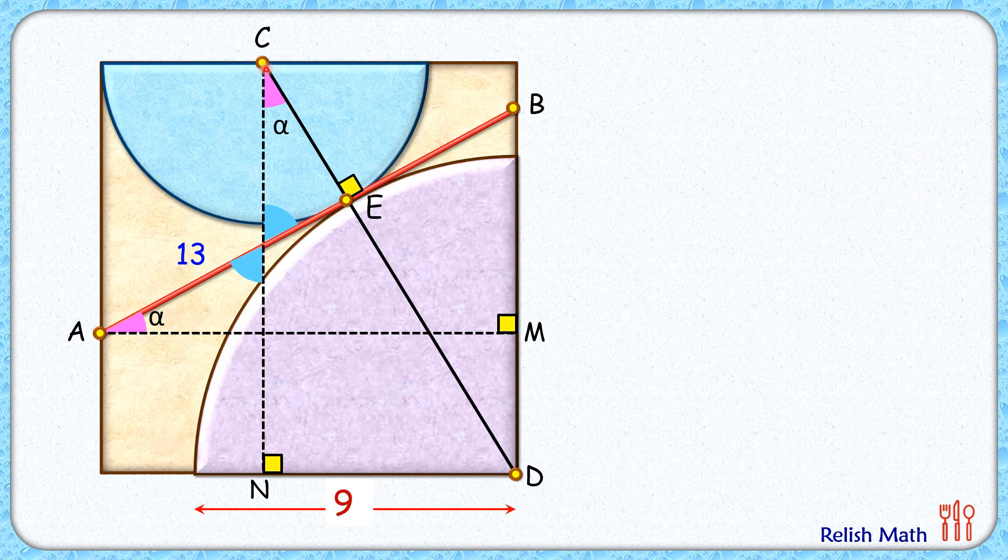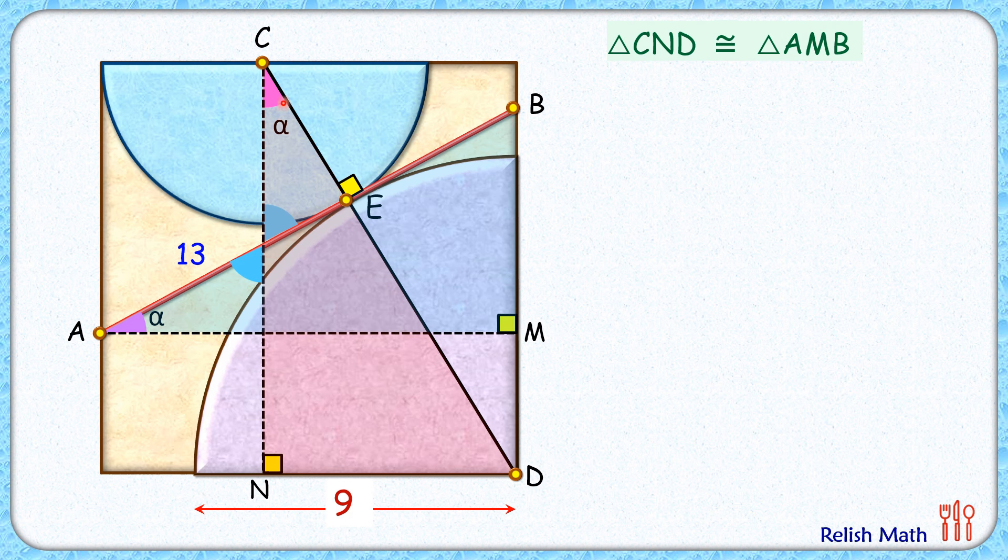Now for these two triangles, triangle CND and triangle AMB, these triangles are congruent via angle-side-angle, as this angle alpha, the side AM, and this 90 degrees are there in both the triangles. AM and CN are equal because they are the sides of the square.